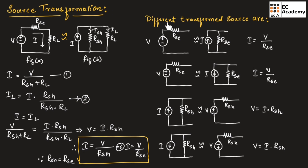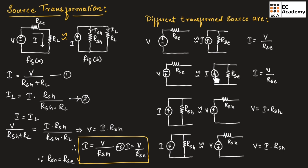Now let us understand different transformed sources. In both cases, voltage sources are converted into current sources; the only difference is in the direction of current flow. We know a voltage source can be replaced with a current source by connecting the internal resistor in parallel. The direction of current depends upon the polarities of the voltage source. If we have plus and minus on the voltage source, the direction will be upwards, and if we have minus and plus, the direction will be downwards.